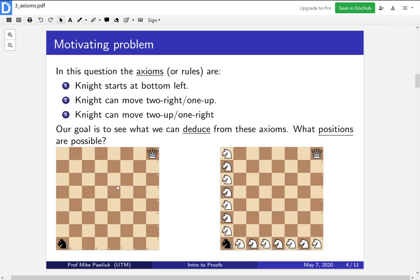So in this problem, the axioms, or the rules, are these three. The first rule is that the knight starts at the bottom left. The second rule is that the knight can move using the two right, one up move. And the third rule is that the knight can move using the two up, one right rule. Those are the three things that we're allowed to do in our problem. Now our goal is to see what can we deduce from these axioms. So from these starting rules, what other positions are possible? What else can we conclude? And also, what other positions are impossible?